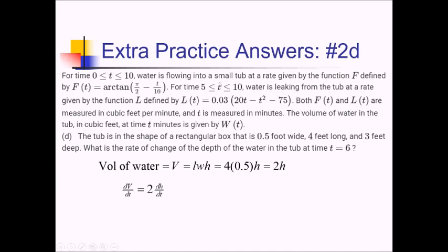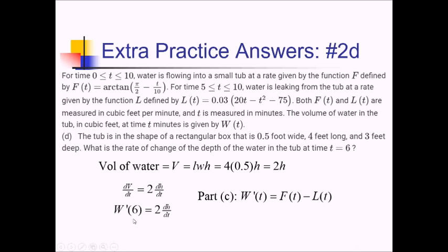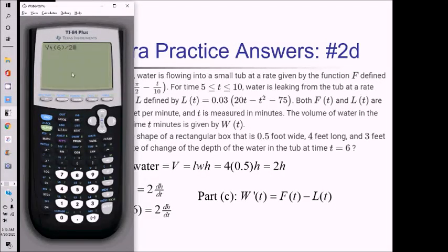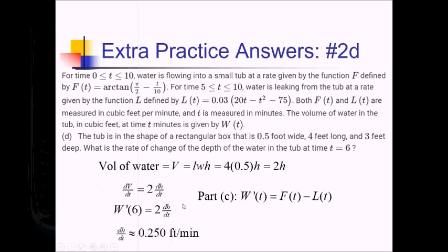We want dh over dt, so we need dV over dt at time 6. From part C, for times 5 to 10 the rate of change W prime is F of T minus L of T, which I stored as Y4 in my calculator. So W prime of 6 equals 2 times dh over dt. Plugging 6 into Y4 and dividing by 2 gives 0.250 feet per minute. So the depth is increasing at 0.250 feet per minute at time 6.